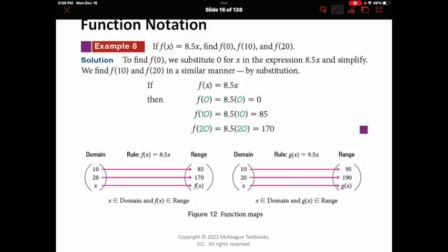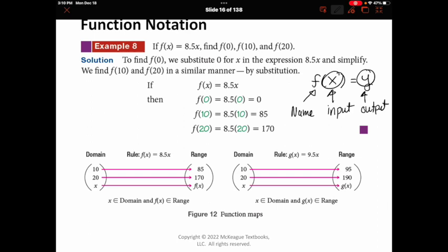The last topic is function notation. In the first example, f(x) equals 8.5 times x. When you see that notation, whatever letter is used is the name of your function — it could be g, or anything, but most often we see f because it stands for function. What we plug in is the input — part of the domain — and whatever we get out is the output. We use x's and y's because that's what's familiar, but keep in mind those could be different letters representing input and output.